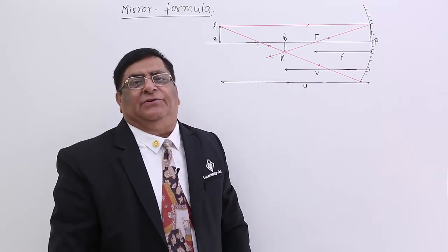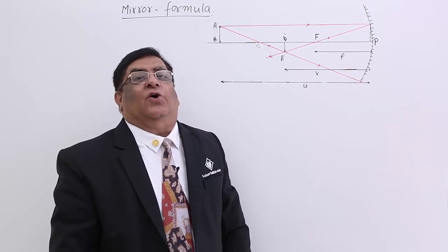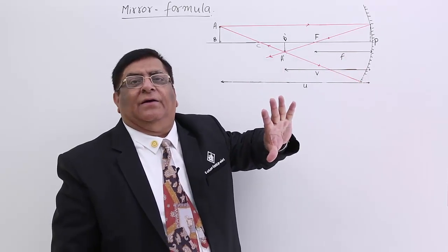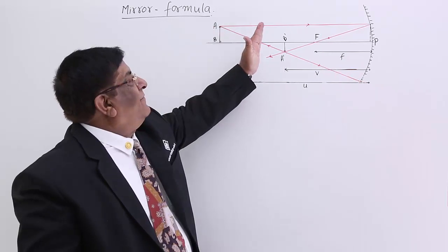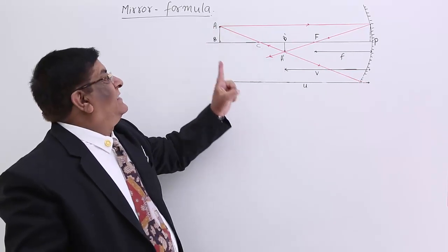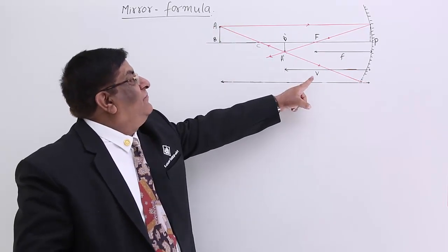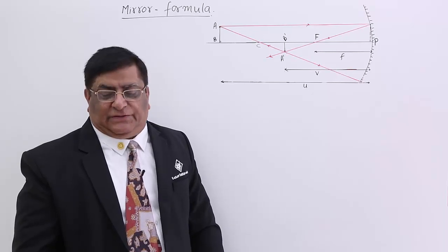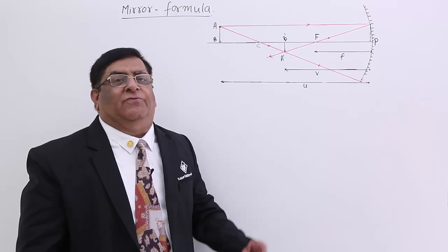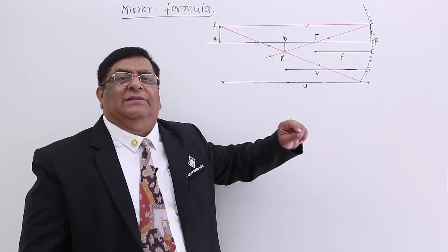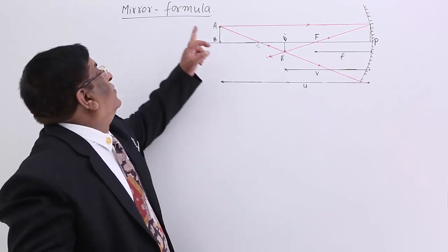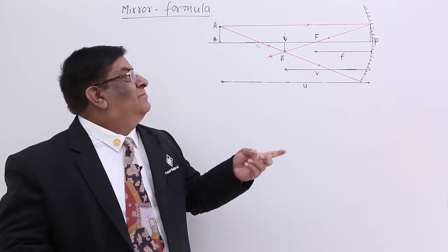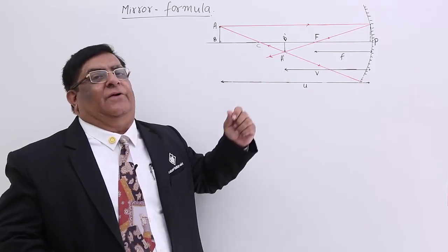Remember, out of these three quantities, focal length F is the one which is a constant, because that is a property of this mirror. Whenever we are bringing the object closer or away, we are changing U, and accordingly V also keeps on changing. So U and V keep on changing while F remains constant. The relation between V, U and F is known as the mirror formula. With the help of the principles of physics we will find the mirror formula.